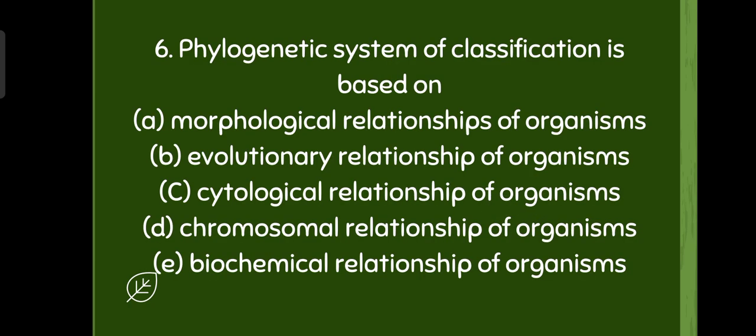Phylogenetic system of classification is based on evolutionary relationship of organisms. Option B is the right one, evolutionary relation of organisms.